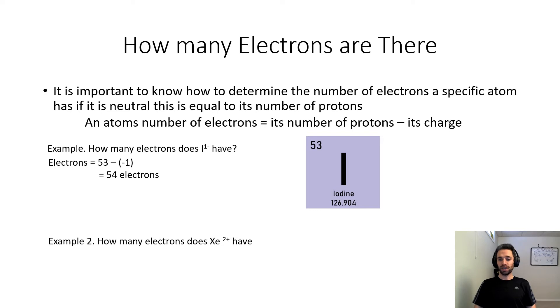Conversely, how many electrons does xenon with a positive two charge have? Let's use the same formula. We have our number of electrons equal to 54 minus plus two, which is our charge, so it's really 54 minus two, which is 52 electrons.